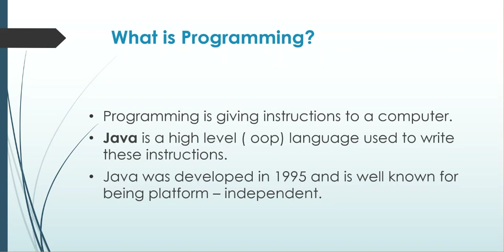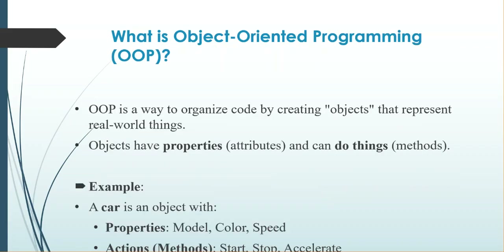Java has several key features. It is object-oriented, meaning everything in Java revolves around objects and classes. What is object-oriented programming? This is a way to organize code by creating objects that represent real-world things.